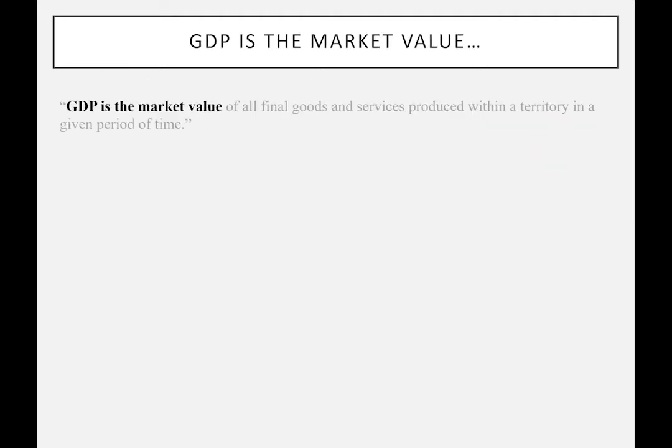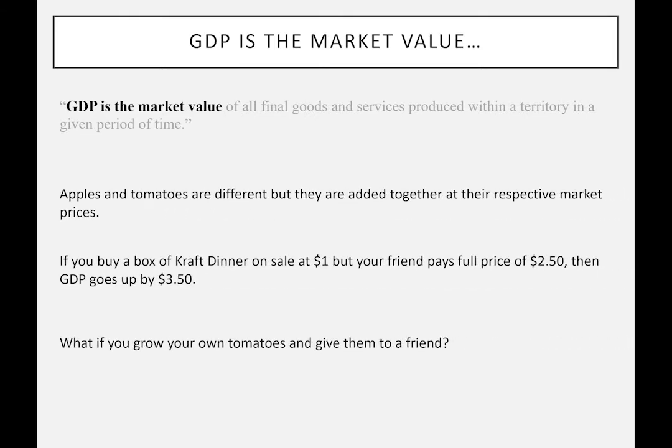GDP is the market value — one of the initial problems they faced is that a country like Canada produces many different things, like apples and tomatoes, measured in different units like kilograms or litres. They decided to add them together according to market price. In practice, if you buy a box of Kraft Dinner for one dollar, GDP goes up by one dollar; if your friend buys the same box for three fifty, it goes up by three fifty; if you buy an automobile for twenty thousand dollars, GDP goes up by twenty thousand dollars — always by the price paid, whatever that may be.